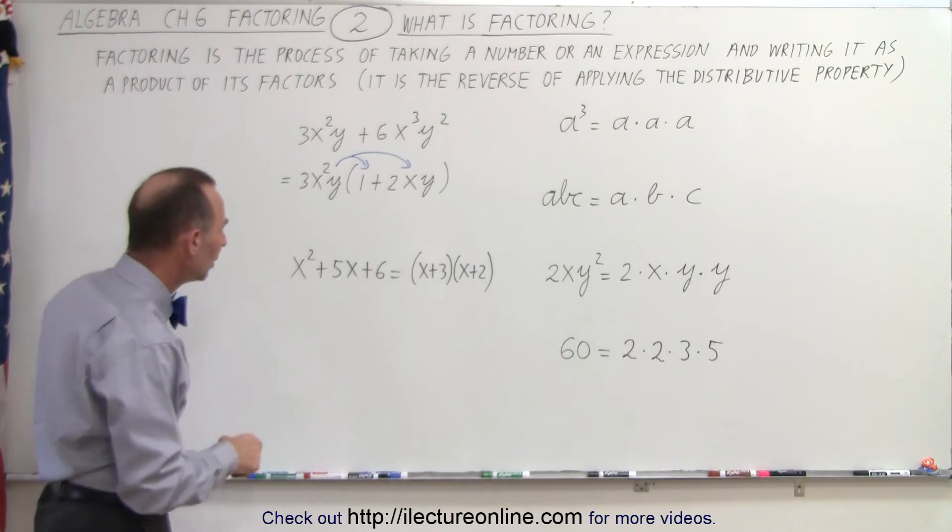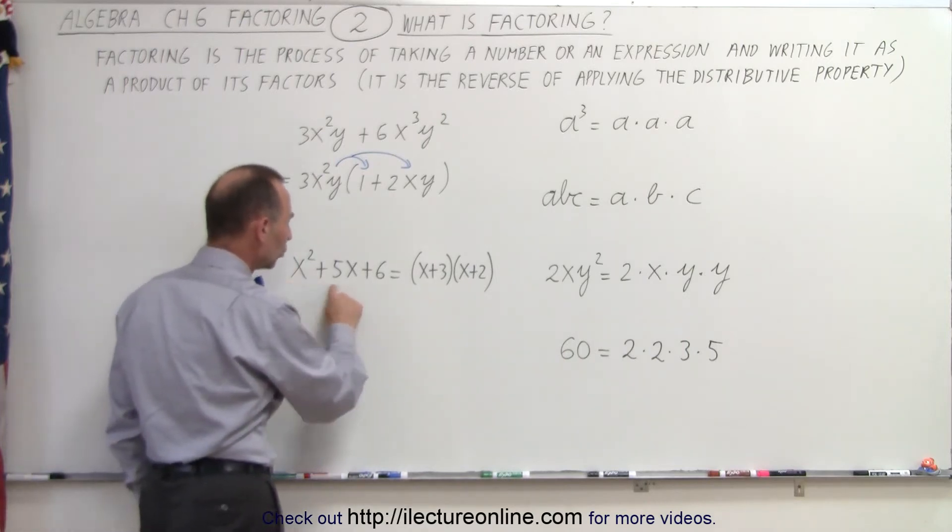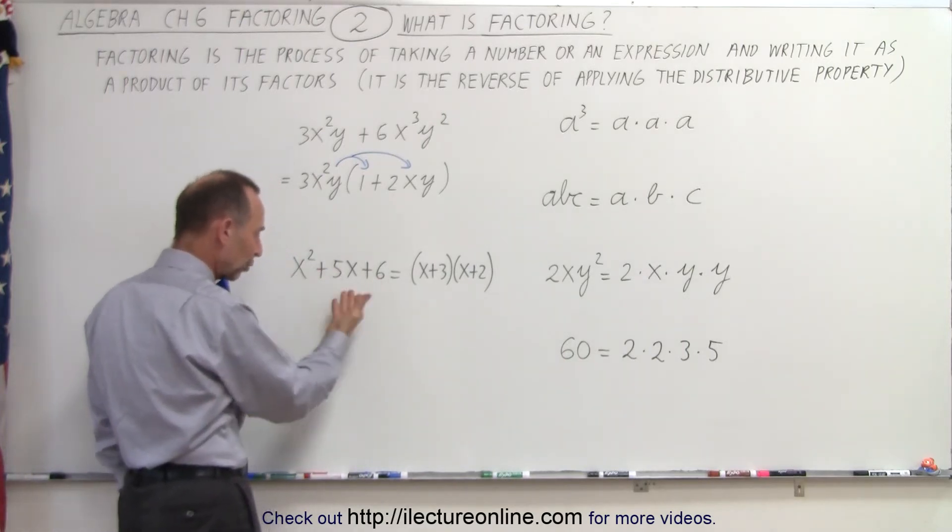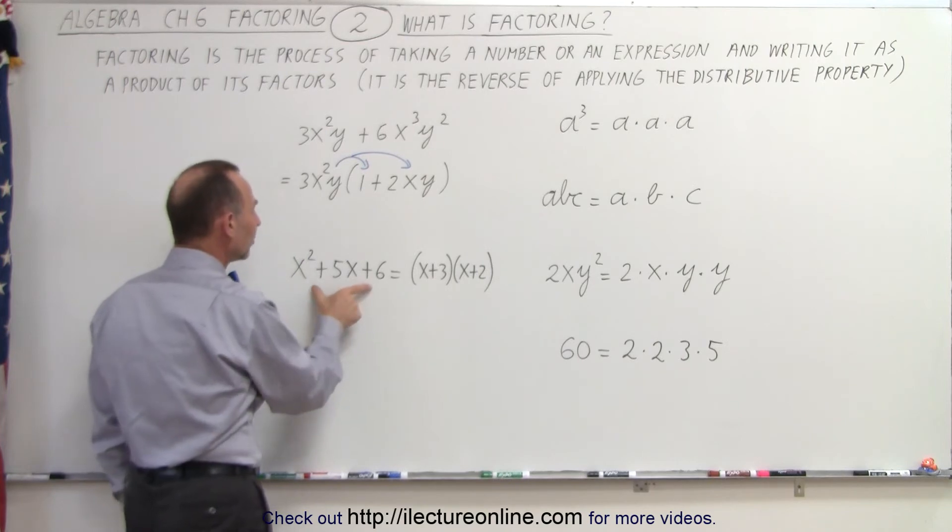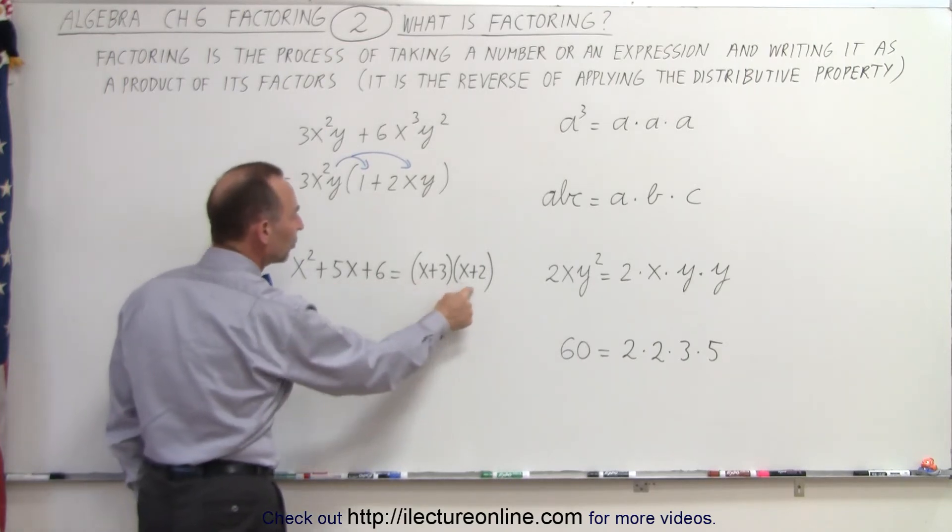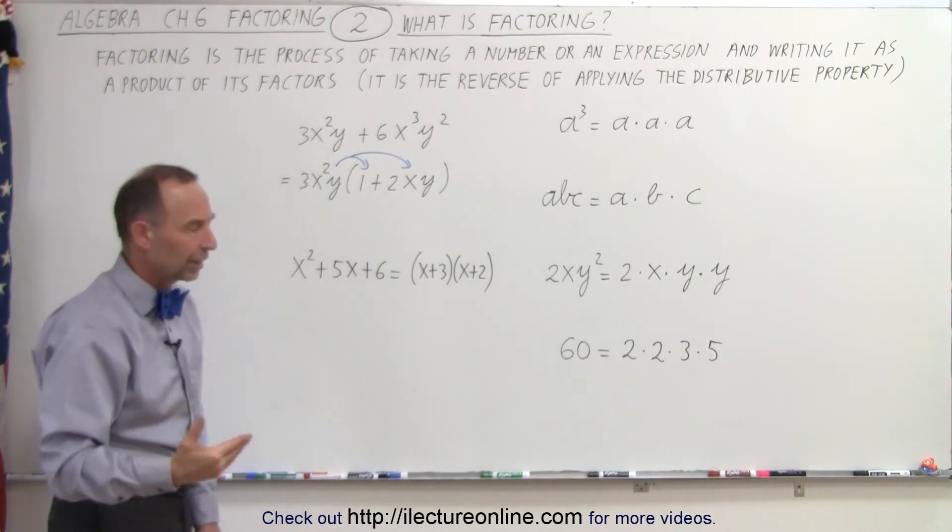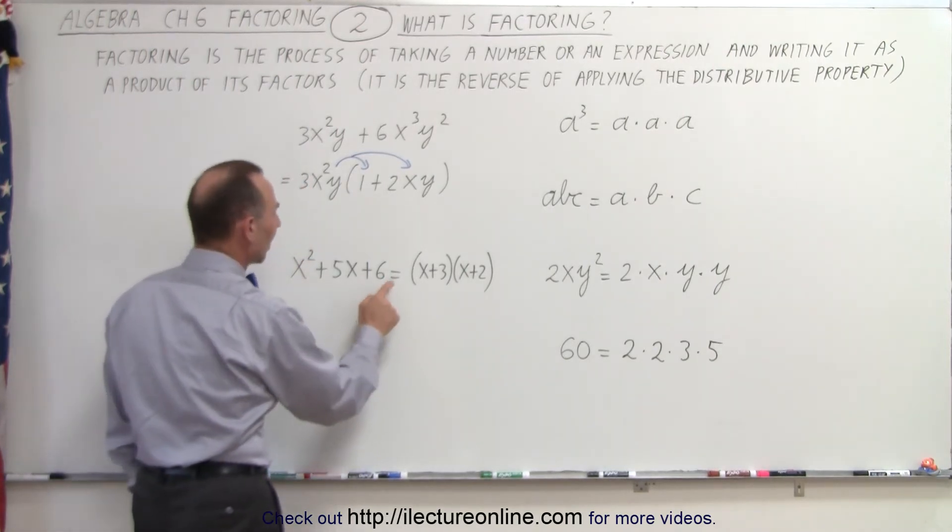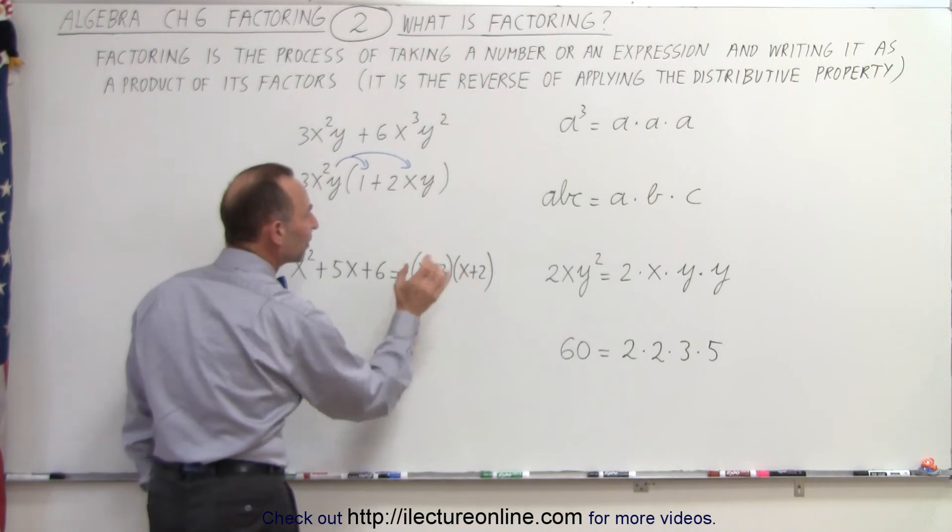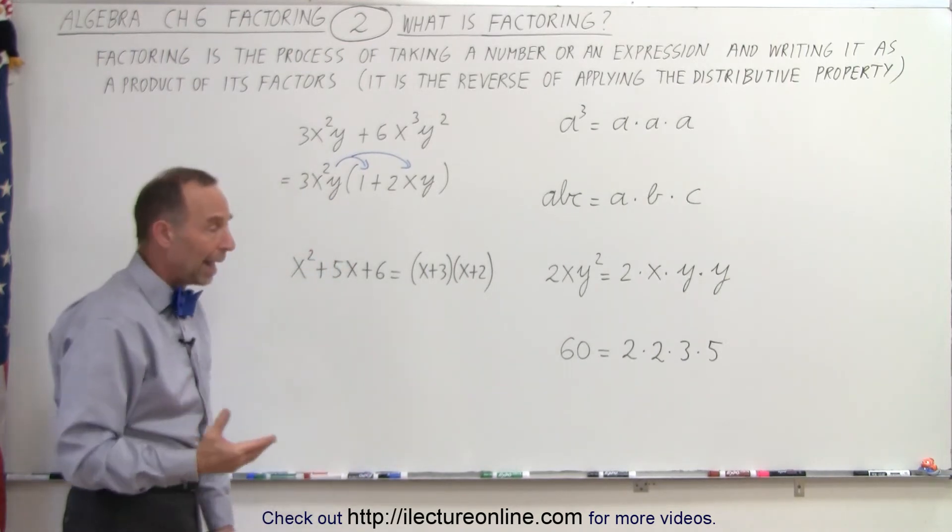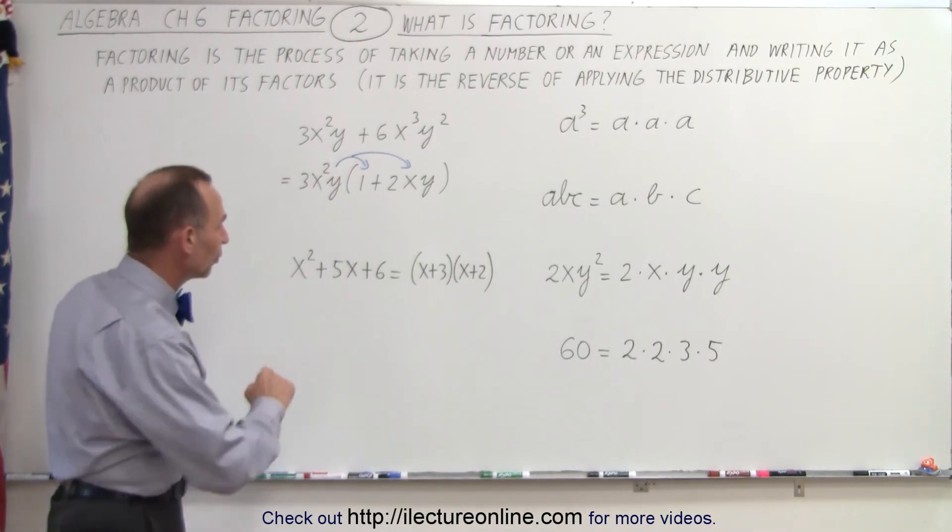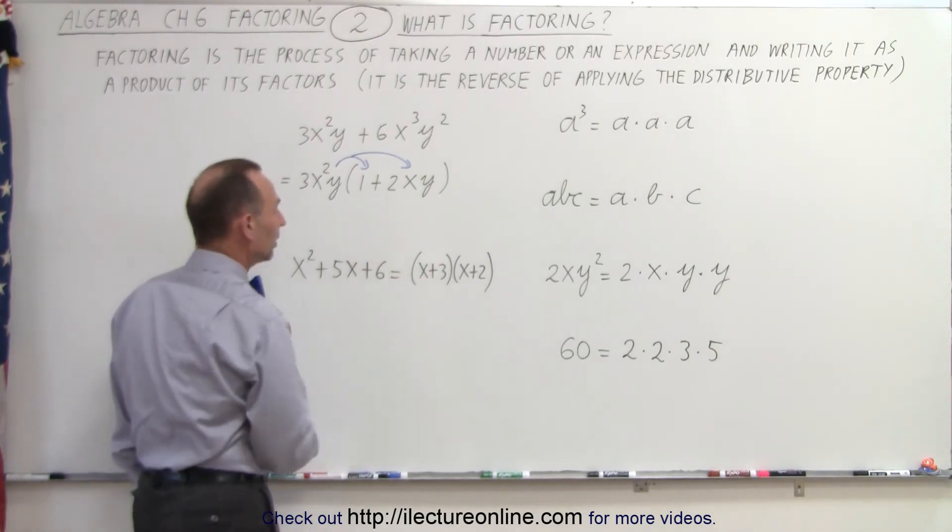Same over here. Notice we have a polynomial of three terms, or a trinomial. We can write this trinomial as the product of two binomials. This is called factoring. Taking a trinomial like this and writing it as a product of its two factors or as a product of two binomials. So this process is called factoring.